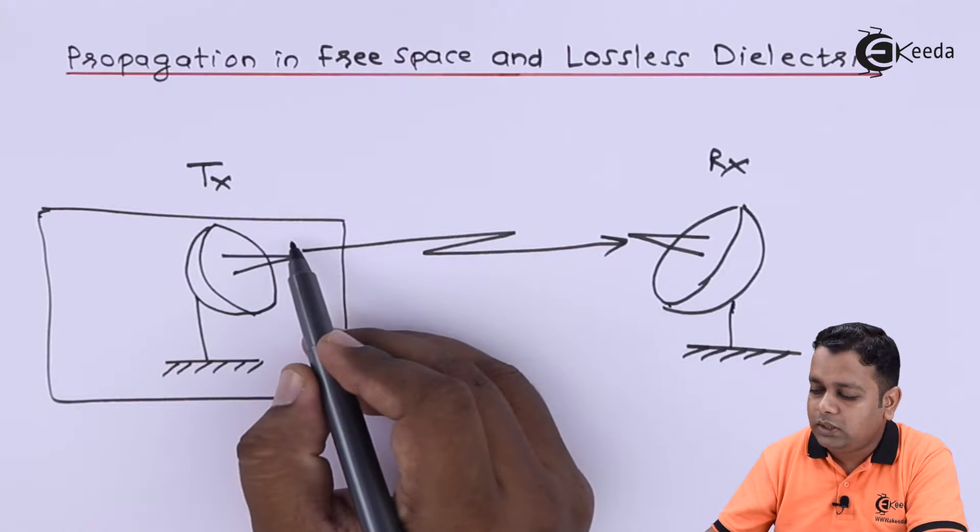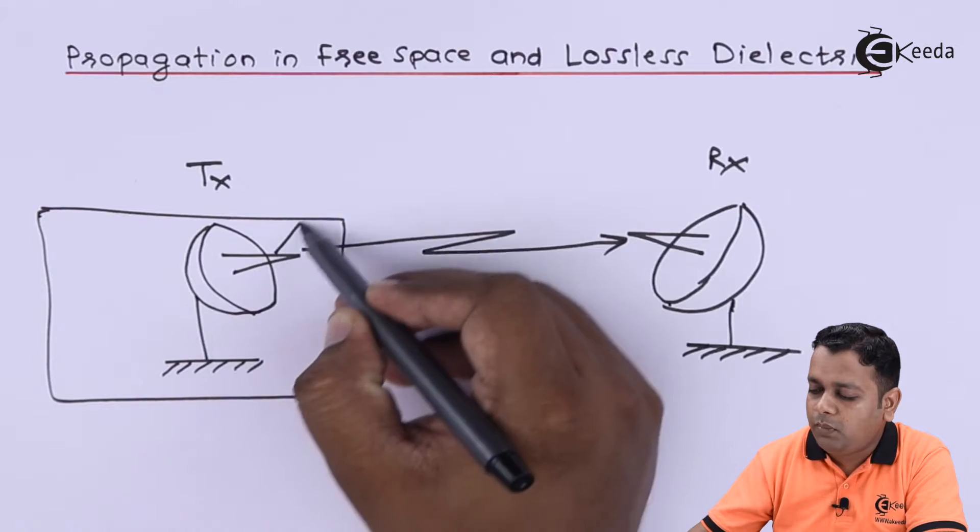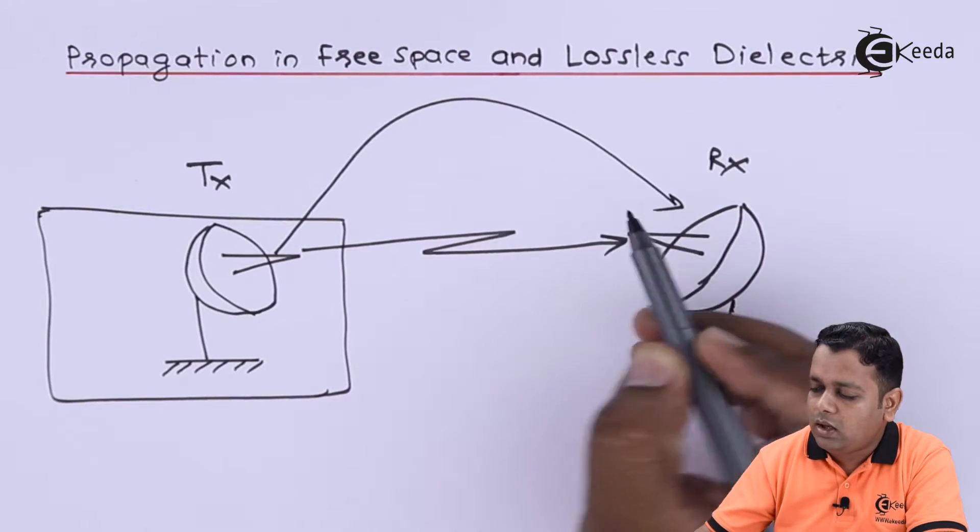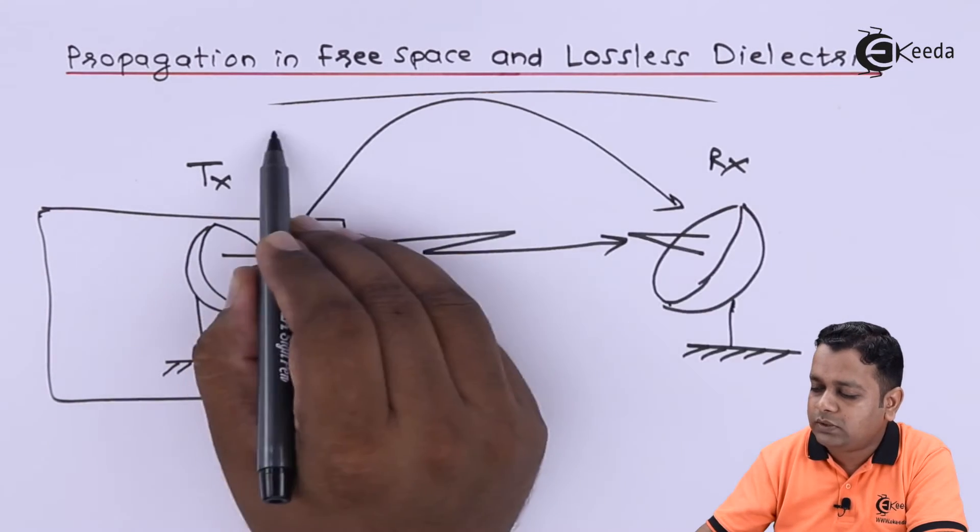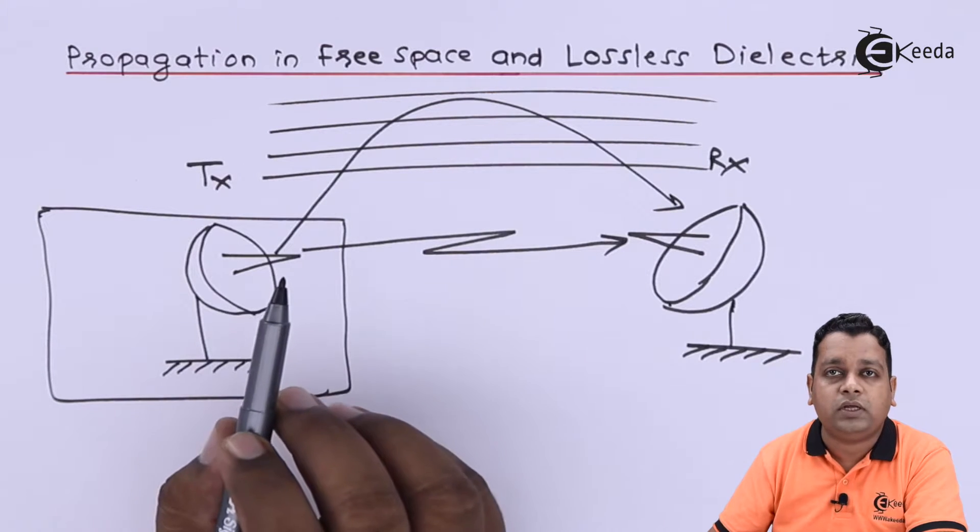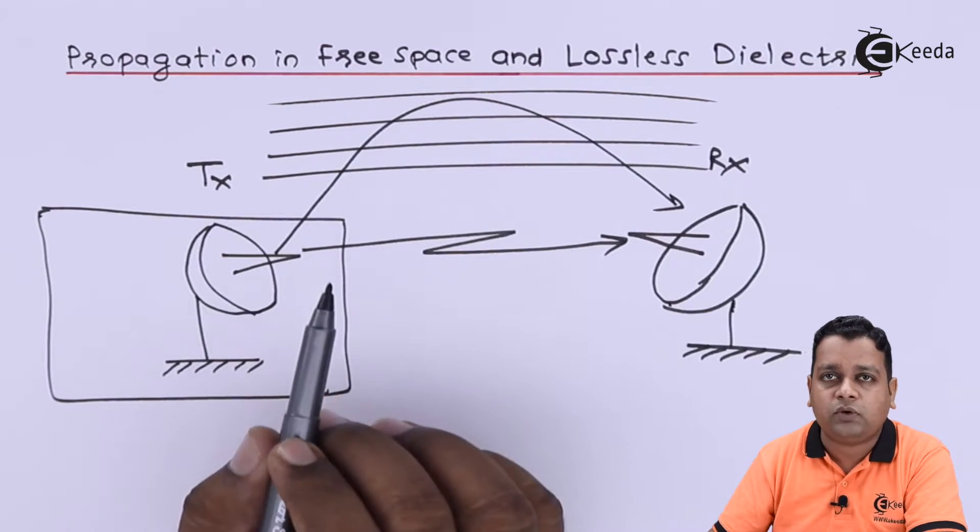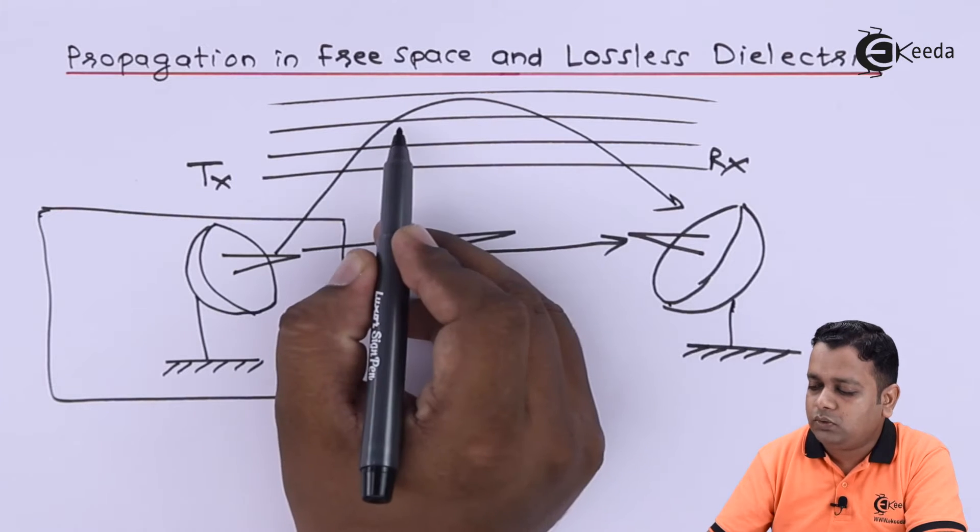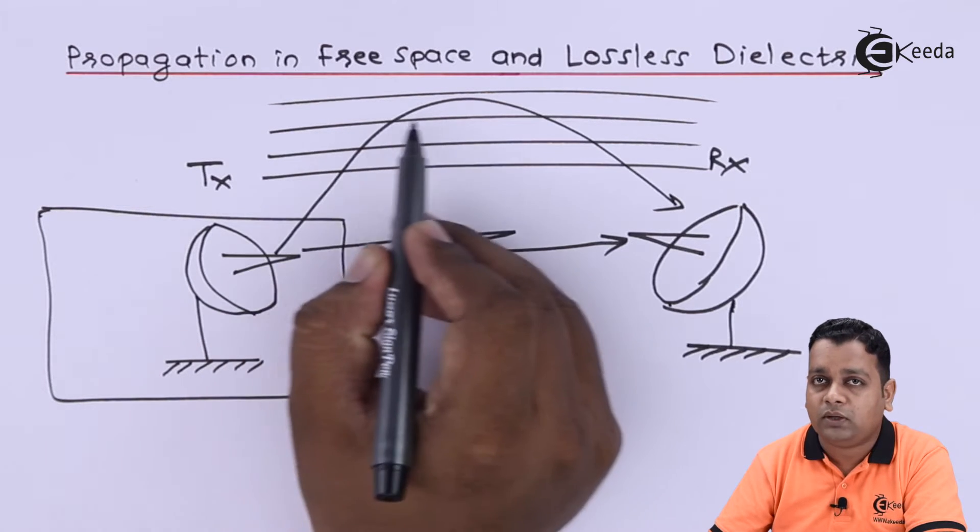Another path is through the ionosphere. Ionosphere is one of the atmospheric layers at approximately 50 kilometers from the Earth's surface. From the ionosphere, it will have a reflection back to the Earth's surface.